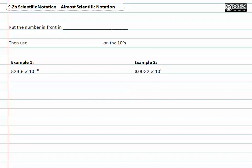Sometimes numbers are almost in scientific notation, but a is not between one and ten. Because of this, we have to shift decimal places one way or the other to keep track of real scientific notation. We have to put the number in front in scientific notation, then use exponent properties on the tens.